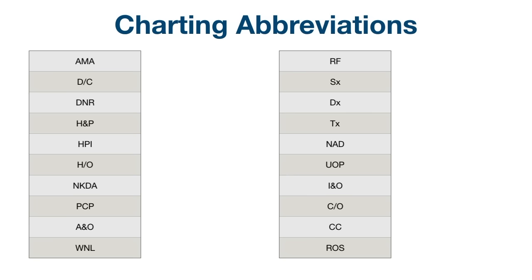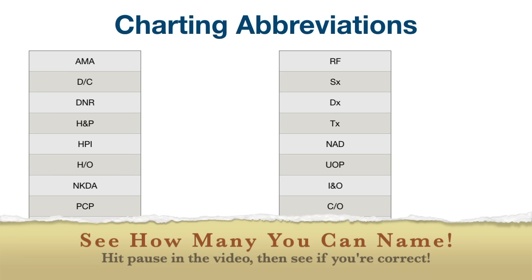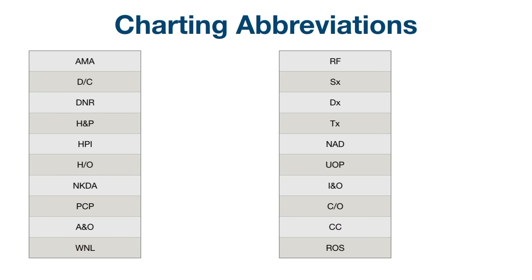We're going to begin with common abbreviations that you might see with charting. Hit pause in the video and try to name as many as you can and then see how many you get right. So starting with AMA — that stands for against medical advice. DC stands for discharge or discontinue.